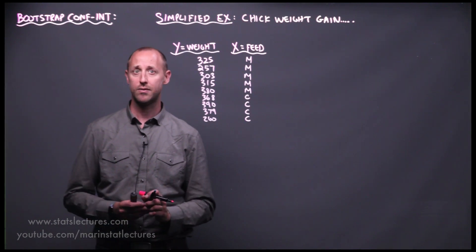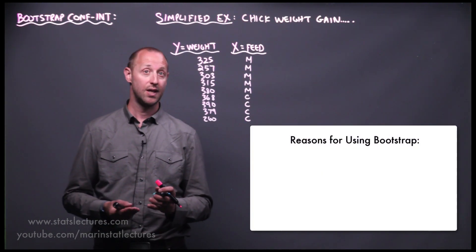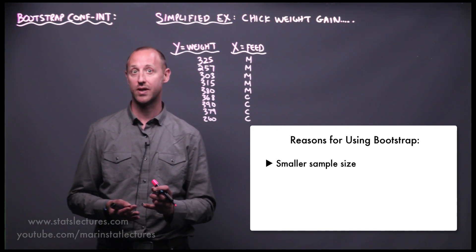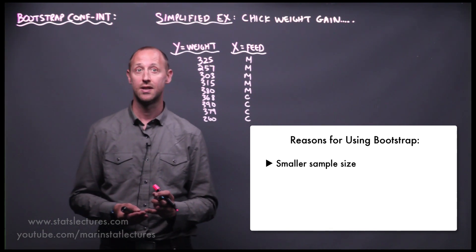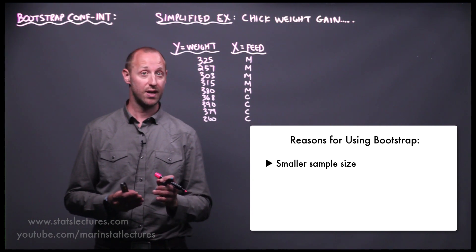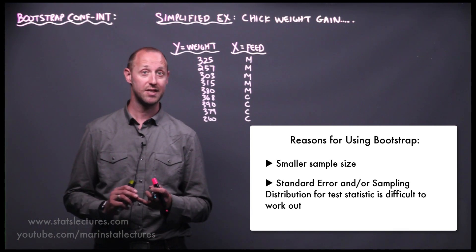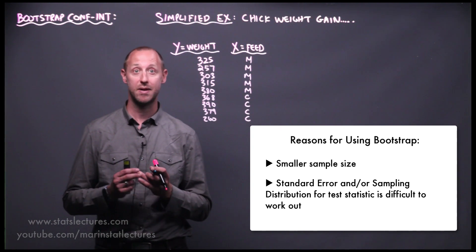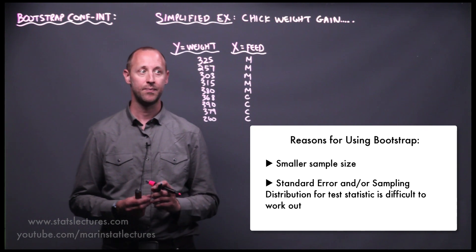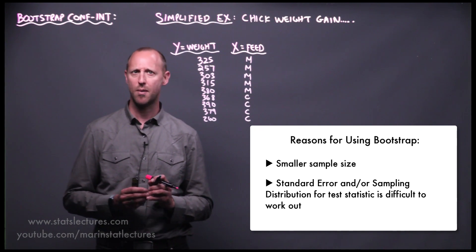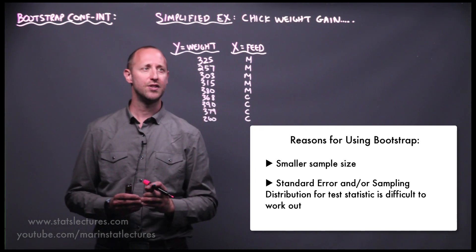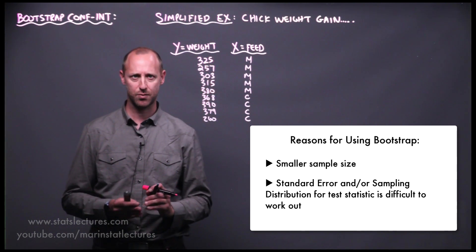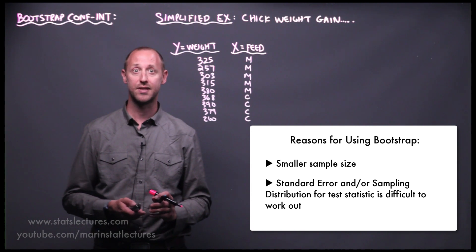A reminder that we might use a bootstrapping approach if we have a small sample size and our large sample assumptions are not met. It's also useful when working with a fairly complicated estimate where it's difficult to estimate the standard error or the sampling distribution shape — for example, the difference in the 80th percentile of weight for two groups, or some composite measure where estimating the standard error is not straightforward.